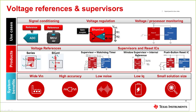This slide summarizes our portfolio. On the voltage references side, we have two types: series references and shunt references. Series references drive the reference pins of ADCs and DACs, whether integrated in your microcontroller or discrete. These offer the highest performance and lowest drift for high-precision signal chains, and are at minimum three-terminal devices with VIN, ground, and output reference pins. We also have dual outputs available.